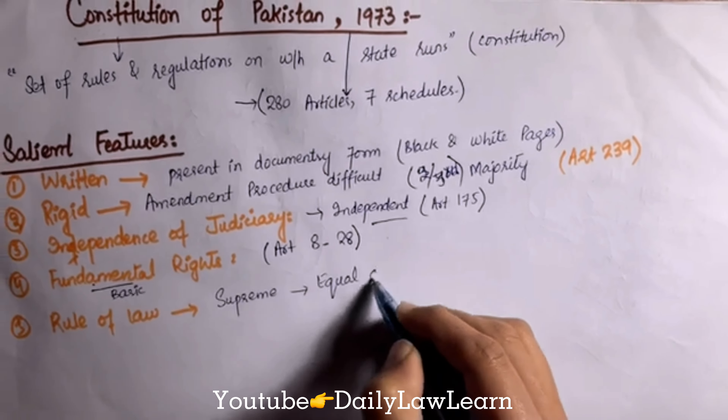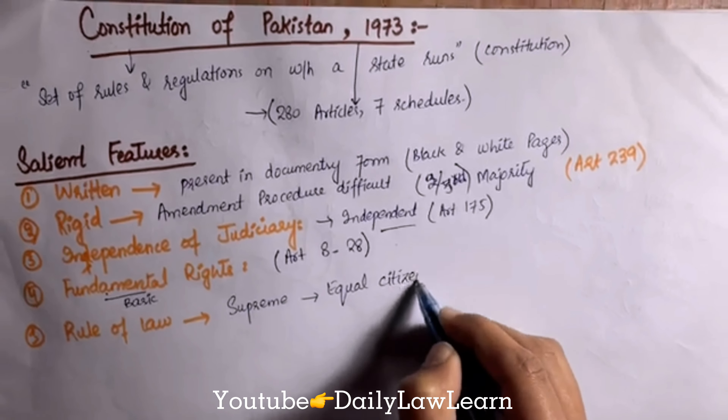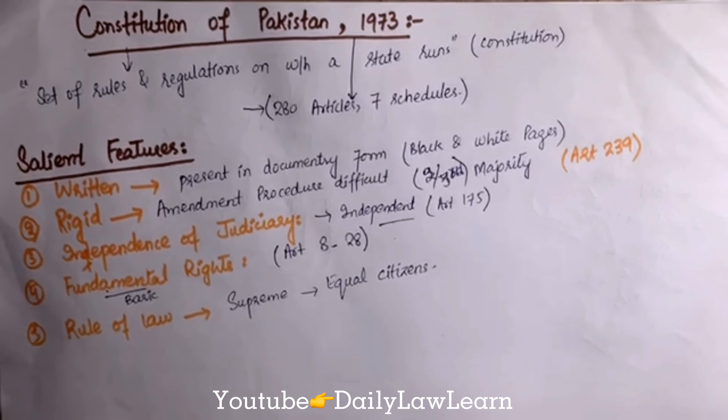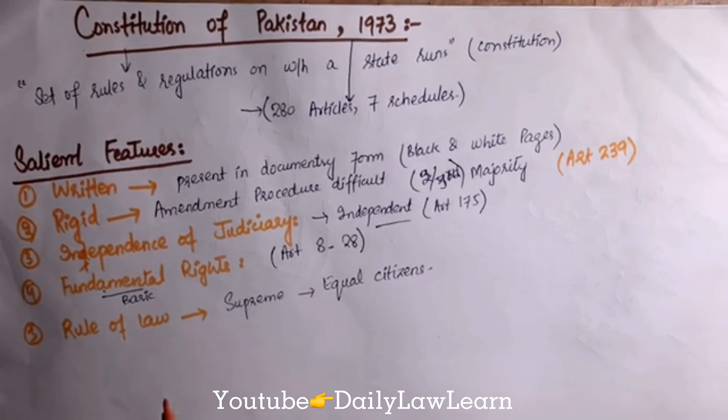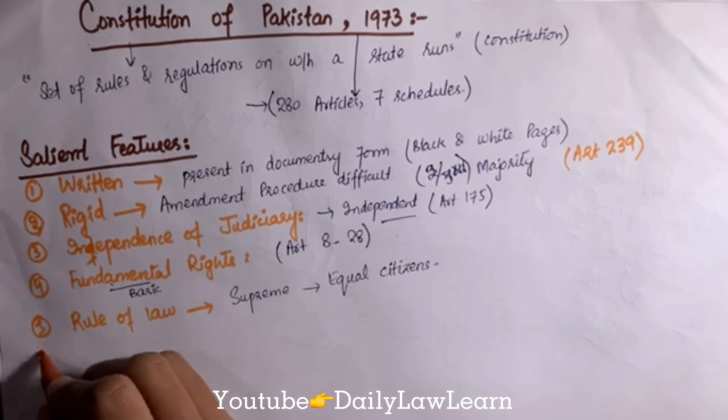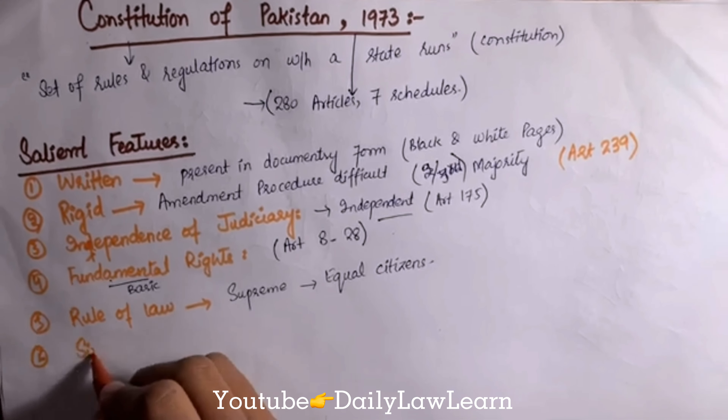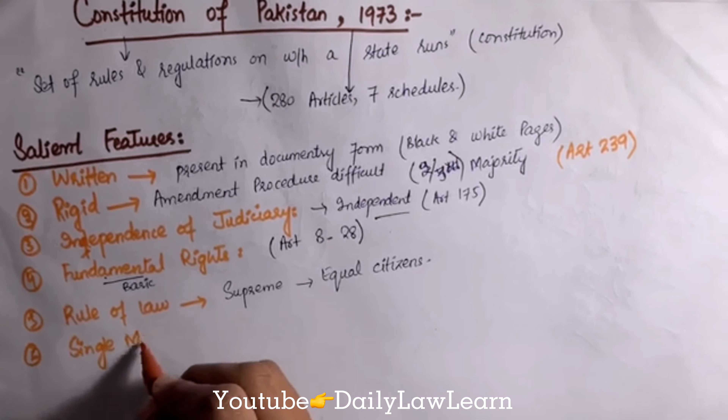The fifth main feature is rule of law, meaning that the law is supreme. The law says that all citizens are equal in the eye of law, as stated in the Constitution of Pakistan 1973.